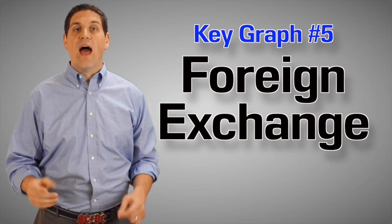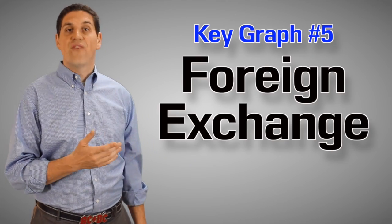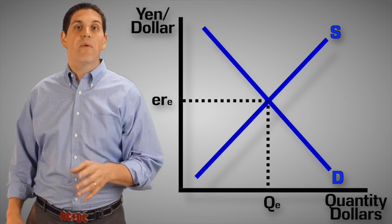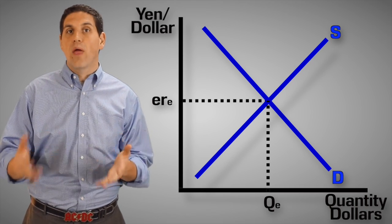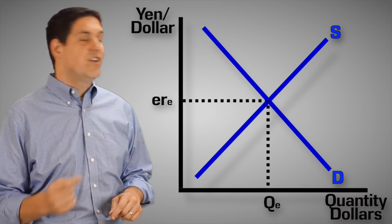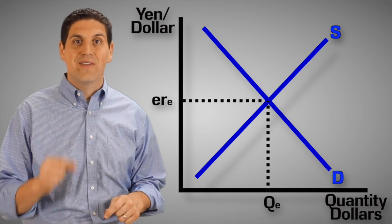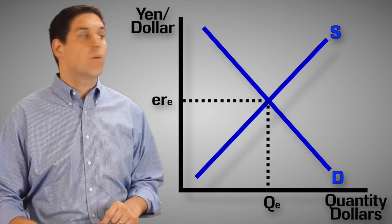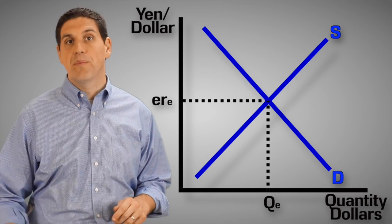The last key graph is the foreign exchange market, which shows the international value of different currencies. Always remember that two currencies cannot appreciate or depreciate relative to each other at the same time. In other words, the dollar can't appreciate to the yen at the same time the yen appreciates the dollar — one will appreciate and the other currency will depreciate.